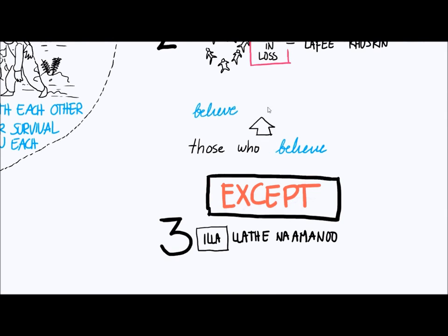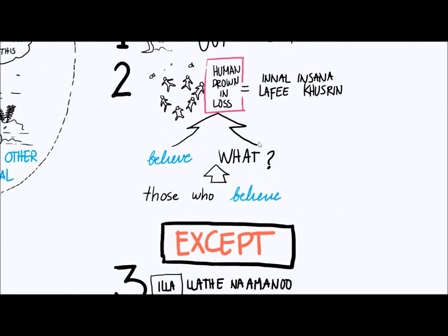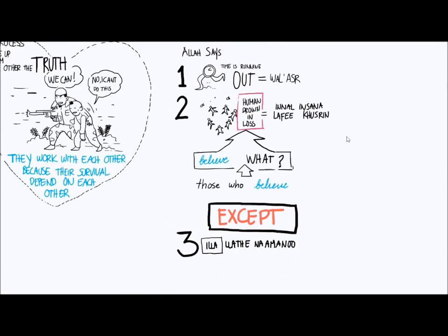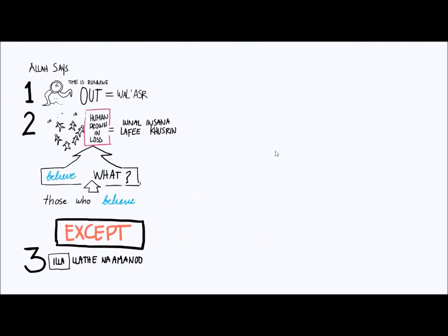Even though all of those things are included, according to the siyaq of the surah, the context of the surah, what is the first thing these people have to believe? That they're in loss. That they're drowning. And if they do come to believe that and they correct their iman, what's necessarily going to happen? They're gonna swim and move upwards.